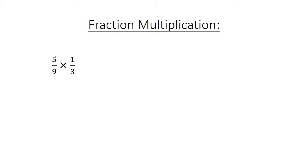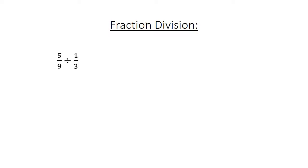Fraction Multiplication: 5 over 9 times 1 over 3 equals 5 over 27. Fraction Division: 5 over 9 divided by 1 over 3 equals 5 over 9 times 3 over 1 equals 15 over 9, which equals 1 and 2 over 3.